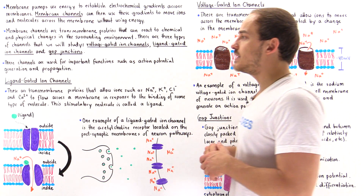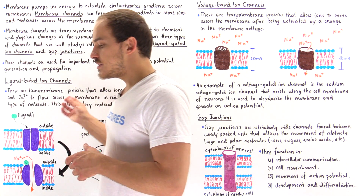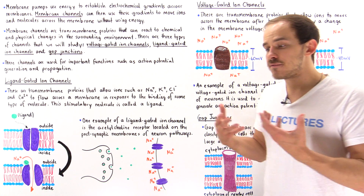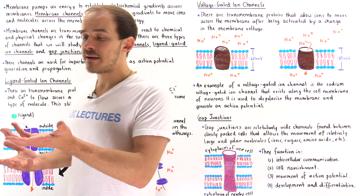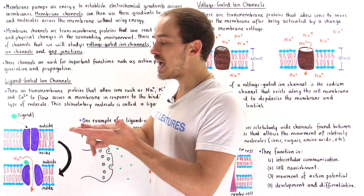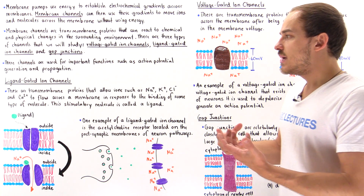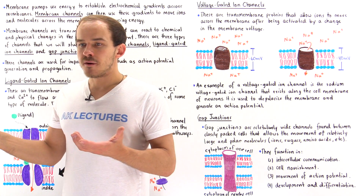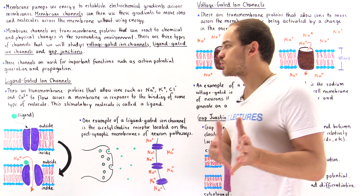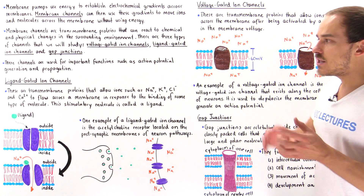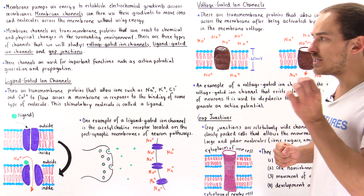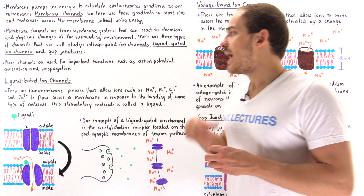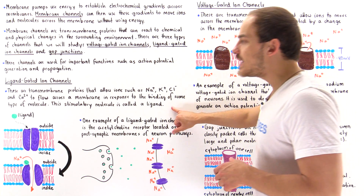Let's begin with the ligand-gated ion channel. This is a channel — a transmembrane protein — that allows the flow of different types of ions such as sodium, potassium, chloride, and calcium. These ions flow across the cell membrane from a high concentration to a low concentration gradient. The opening of these channels is the result of the binding of some type of stimulatory molecule, known as a ligand.